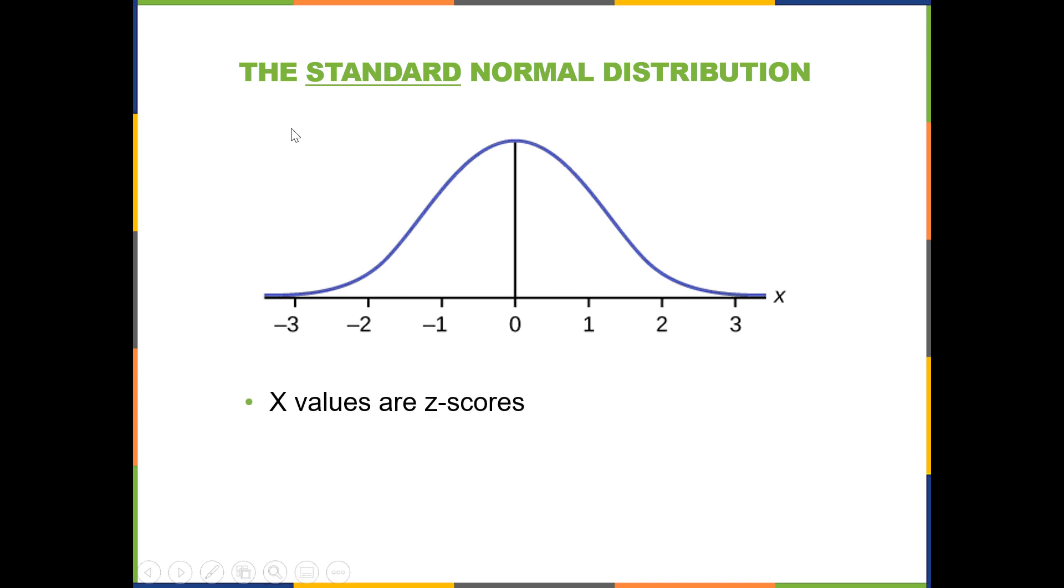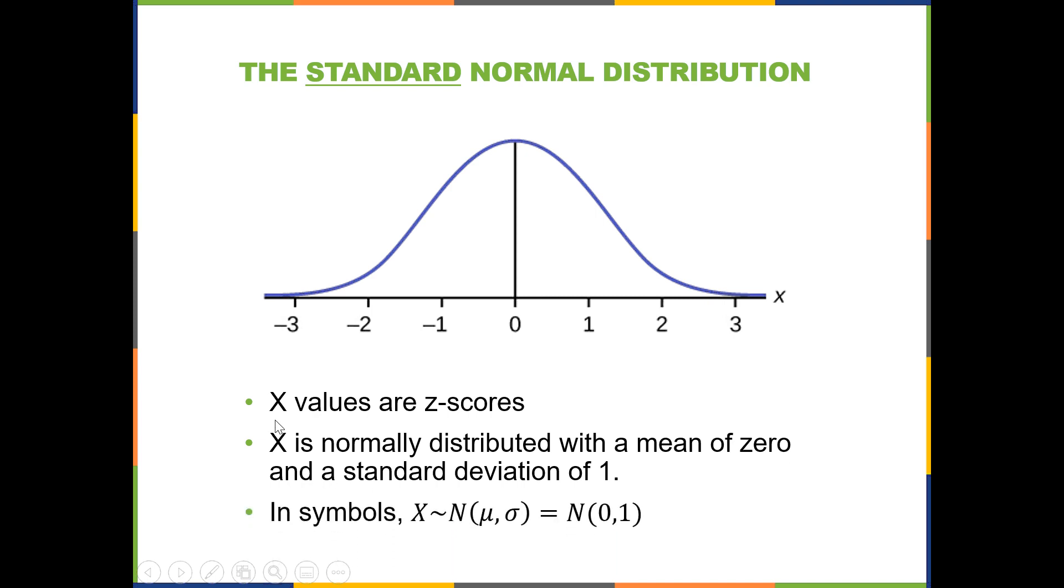So x values are z-scores if you have that property of the mean being zero and the standard deviation being one. We call this standard or standardized. Sometimes you can take a non-standard normal distribution and convert all the x values to z-scores to make it standard, and we'll see an application of that in a future lesson. So if you have a standard normal distribution, your mean is zero and your standard deviation is one, your x values are z-scores. So where we would normally have two separate scales for x values and z-scores, they kind of merge. And in symbols we would write this as x is normally distributed with a mean and a standard deviation that is known. And if it's standard, that mean would be zero and the standard deviation would be one.